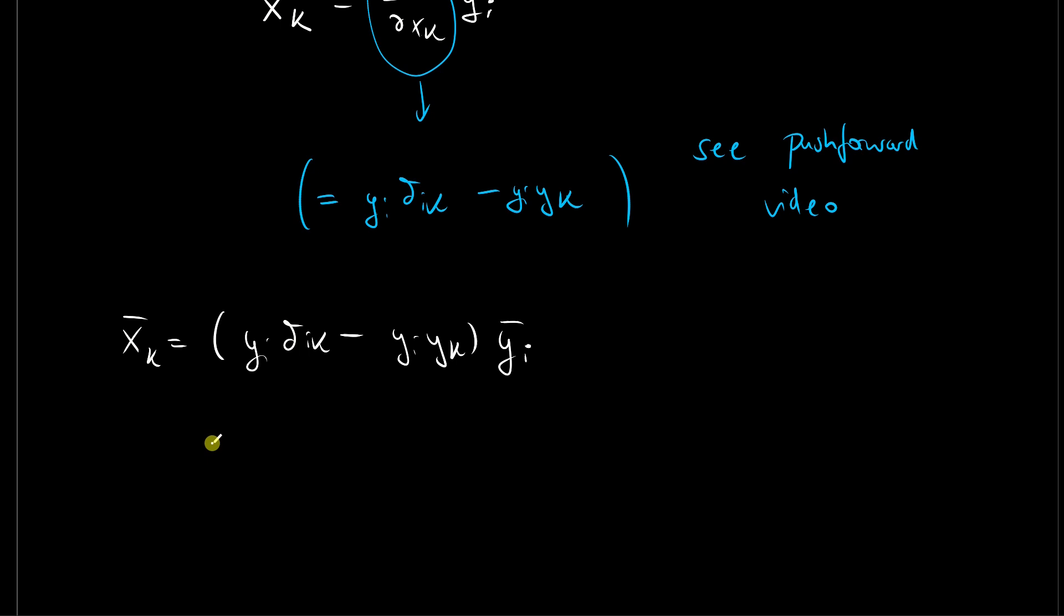So now in order to find the closed form expression, we will plug the Jacobian in. So we will get x bar index k is in brackets yi delta ik minus yi yk multiplied y bar i. And then we multiply out the bracket and get yi yi bar delta ik minus yi yi bar yk.